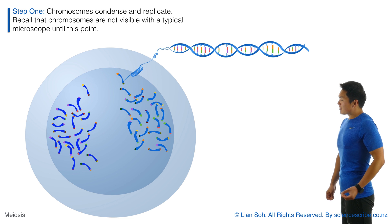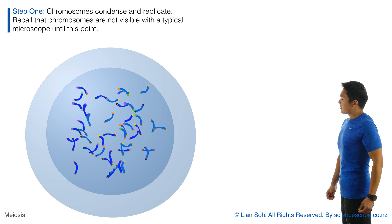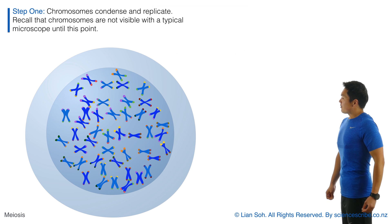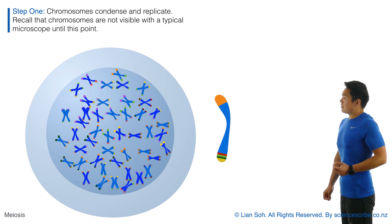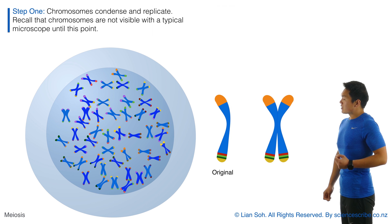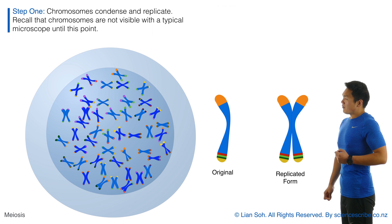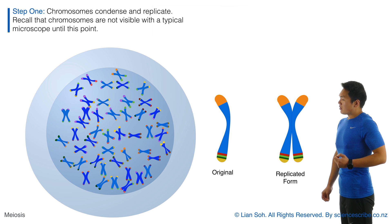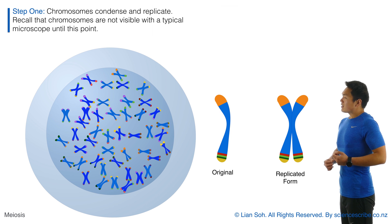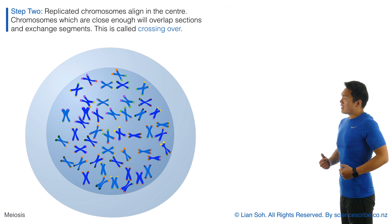In the first step of meiosis, just like with mitosis, the chromosomes condense and shorten and fatten, so they become visible. Just like before, the replicated forms of those chromosomes are shown.